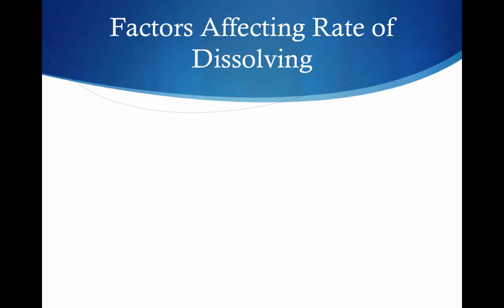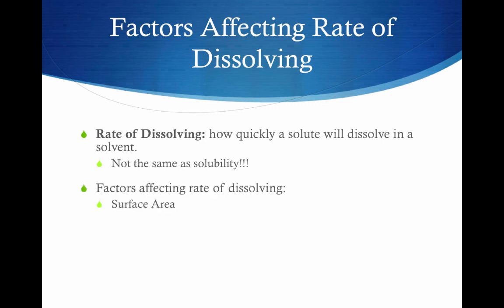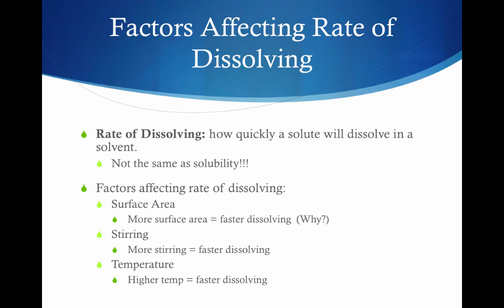We can also look at some factors that affect the rate of dissolving. The rate of dissolving is how quickly a solute will dissolve in a solvent — this is not the same as solubility; it only tells us how quickly something will dissolve, not how much. Factors affecting the rate of dissolving include surface area: sugar from a packet dissolves much more quickly than a sugar cube in hot tea because there is more surface area exposed. Stirring is another factor — stirring generally causes dissolving to occur much more quickly. Finally, increasing temperature will speed up the rate of dissolving, unless you're dealing with a gas.